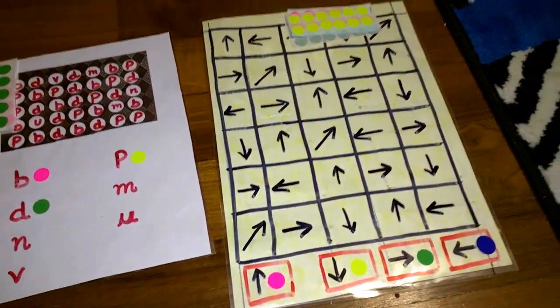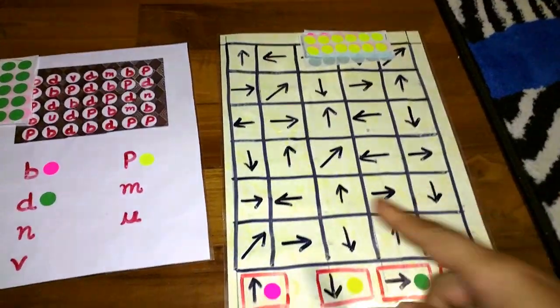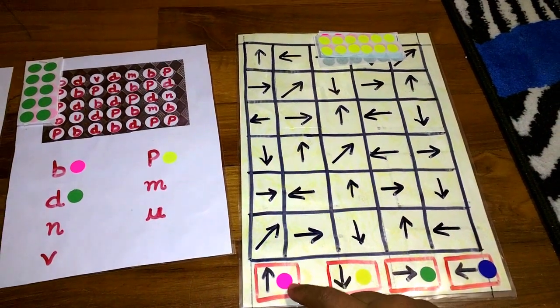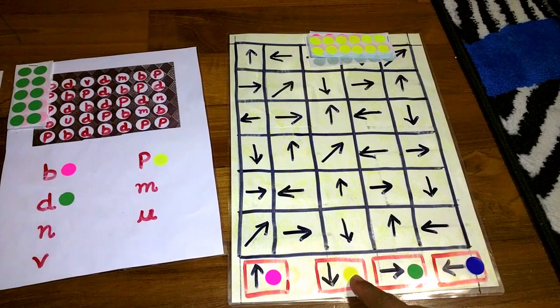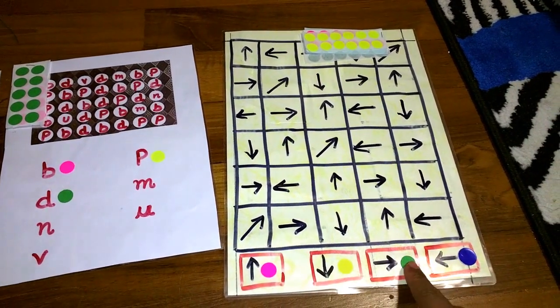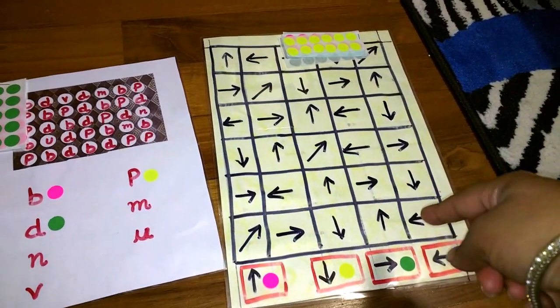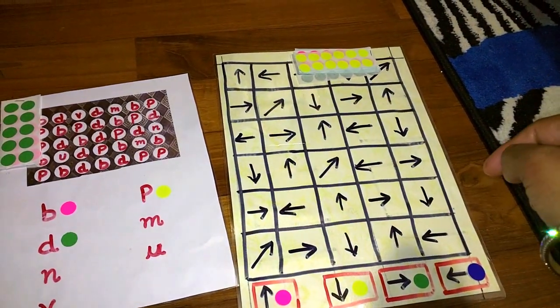The first one is a direction one. Wherever she sees the arrow going up, she has to put pink. Arrow going down, she has to put yellow. Arrow going right, she has to put green, and going left she has to put blue. This is a visual discrimination as well as logic and focus activity.